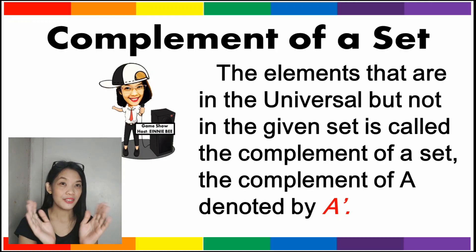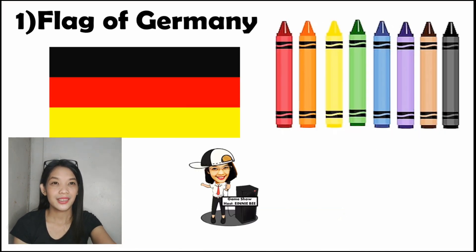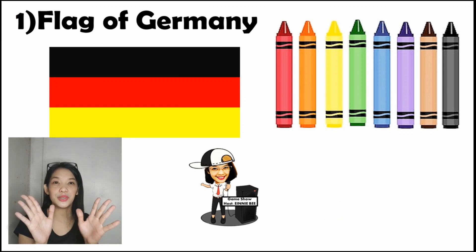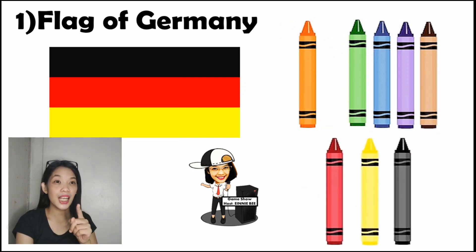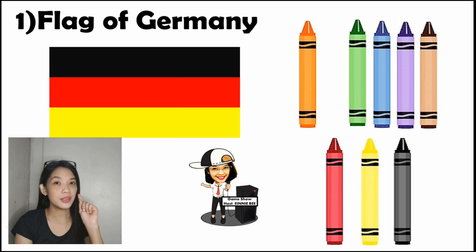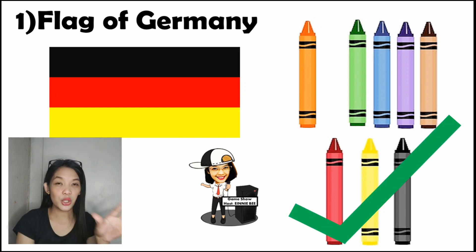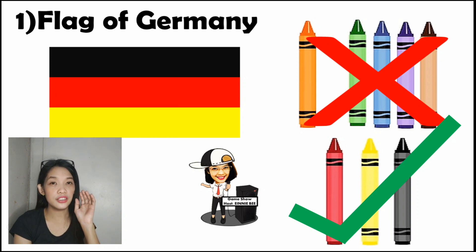Let us define the complement of a set. The elements that are in the universal set but not in the given set is called the complement of a set. The complement of A will be denoted by A and an apostrophe. So let us relate that to our game. We have 8 different colors, but only 3 colors can be seen on the flag of Germany: red, yellow, and black. The remaining 5 colors — orange, green, blue, violet, and brown — are not part of the flag of Germany, and therefore this will be the complement.